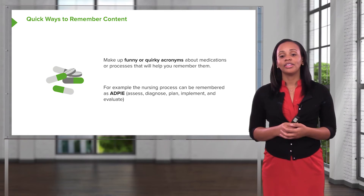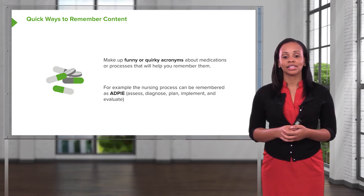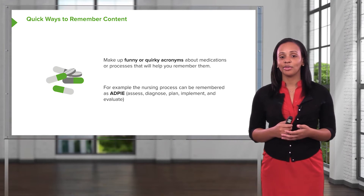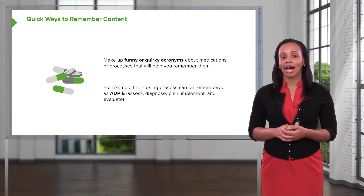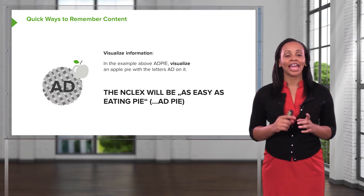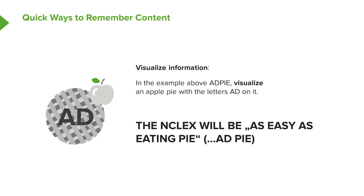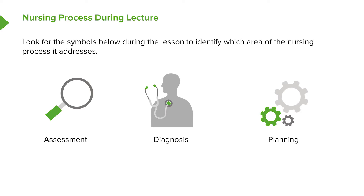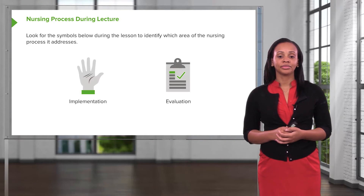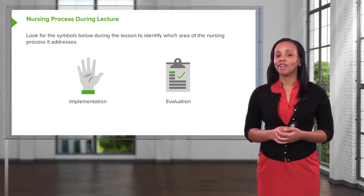For example, the nursing process — which is assess, diagnose, plan, implement, and evaluate — can be remembered as ADPiE. If you visualize an apple pie with the letters AD on it, it will be really hard to forget ADPiE, the nursing process. During the lesson, when you see these symbols, you'll know which part of the nursing process we're reviewing: assessment, diagnosis, and planning; implementation and evaluation.